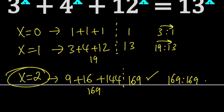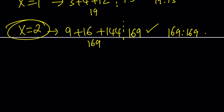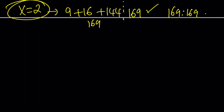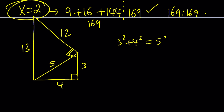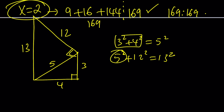But the million-dollar question is: is that the only solution? This basically means we have a Pythagorean triangle — we can write 3, 4, and 5 — and then build another one on top, extending one side to 12 and connecting it to get 13. So we have two right triangles, and the hypotenuse for one becomes a leg for the other, so that 3 squared plus 4 squared equals 5 squared, and 5 squared plus 12 squared equals 13 squared.